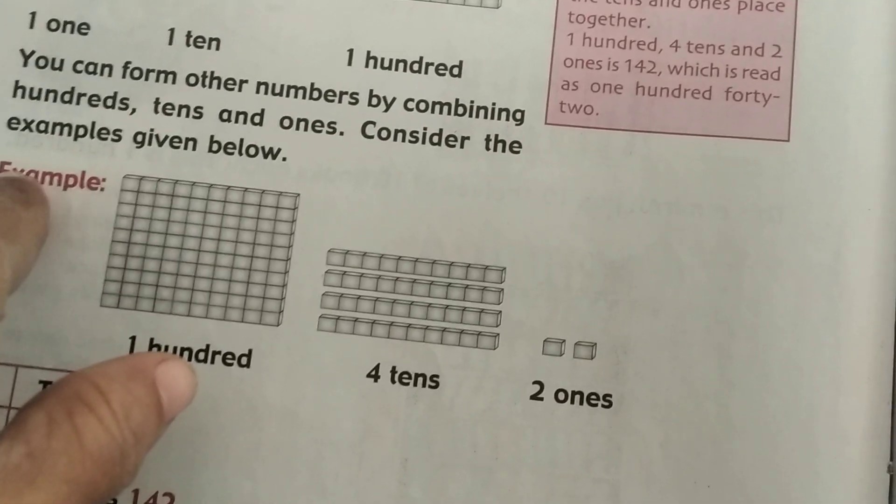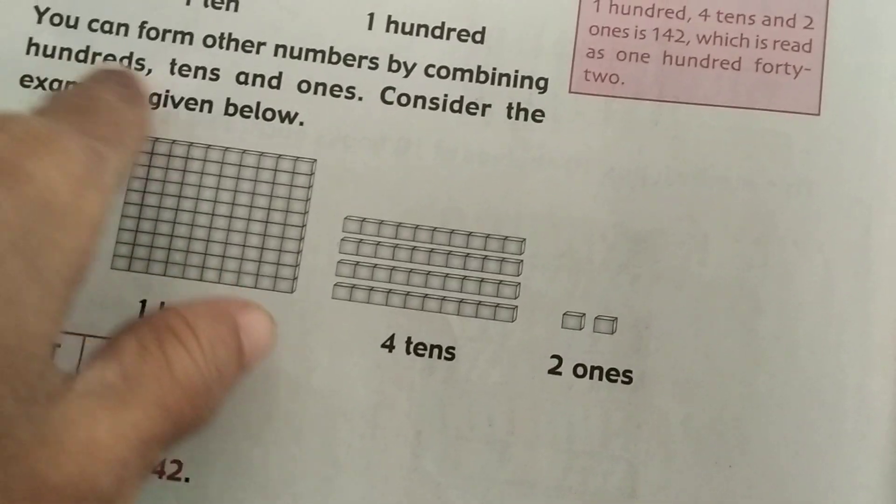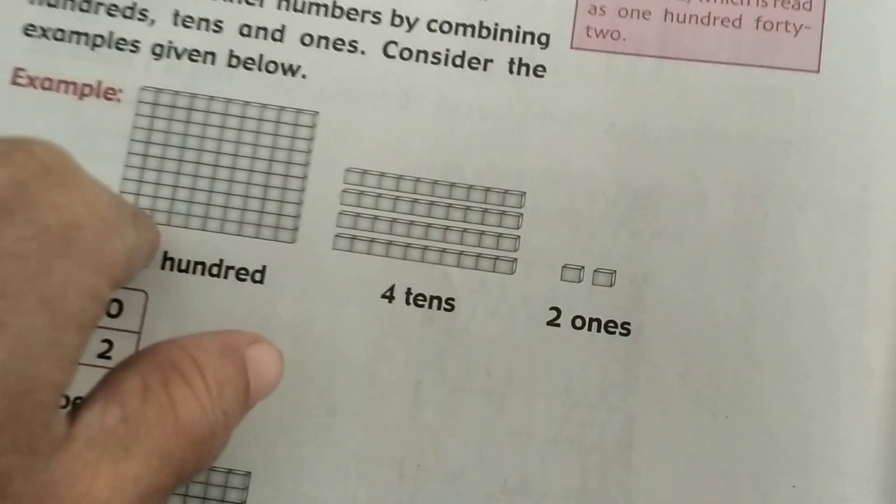So let us see this here. You can form other numbers by combining hundreds, tens, and ones. Here are the examples.